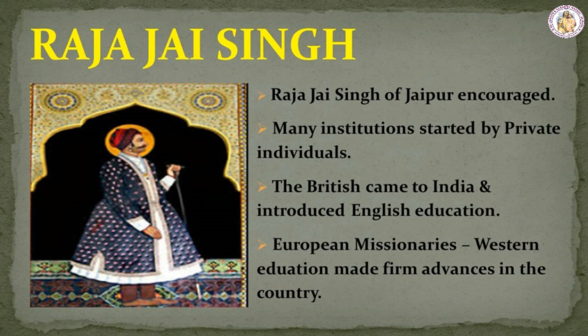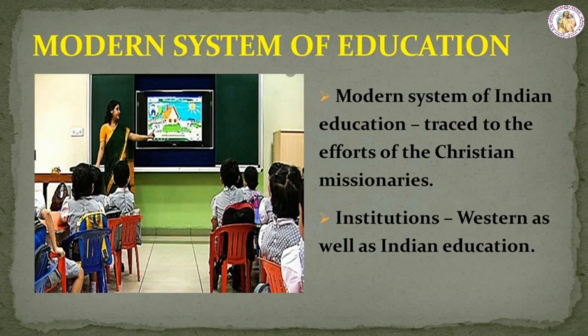The British came to India and introduced English education. With the coming of European missionaries, western education made firm advances in the country. Various universities and thousands of colleges were formed, and the popularity of education increased. The beginning of the modern system of Indian education can be traced to the efforts of Christian missionaries who arrived in India in the wake of European occupation. As a result of their efforts, many institutions were established across India, imparting both western and Indian education.